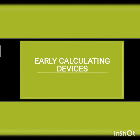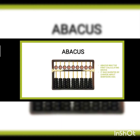We are going to discuss what are the devices that were used in early times for calculations. The first calculating device is the abacus. Abacus was a device invented by the Chinese about 5,000 years ago. As you can see in this picture, this is a device called abacus, in which simple calculations like addition and subtraction can be performed.